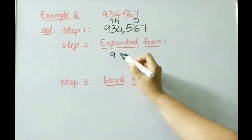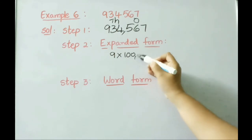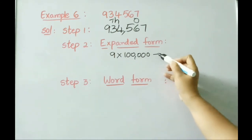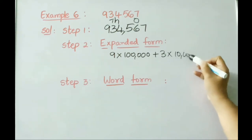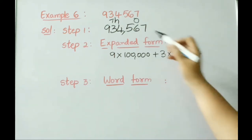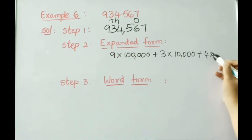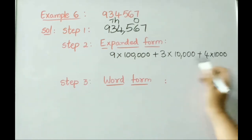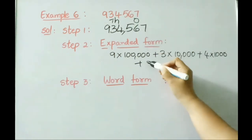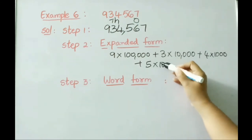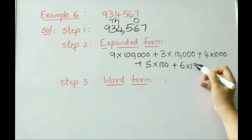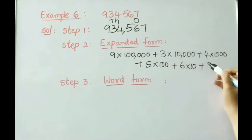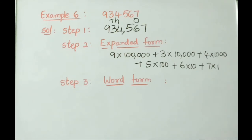Let us write 934,567 in expanded form: hundred thousands place 9 — write 9 × 100,000; ten thousands place 3 — write 3 × 10,000; thousands place 4 — write 4 × 1,000; hundreds place 5 — write 5 × 100; tens place 6 — write 6 × 10; ones place 7 — write 7 × 1.